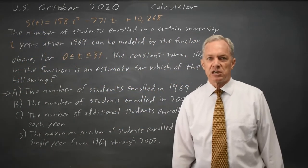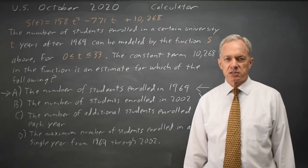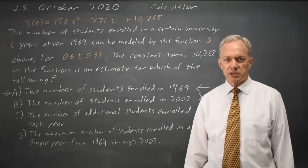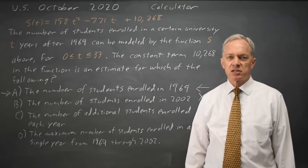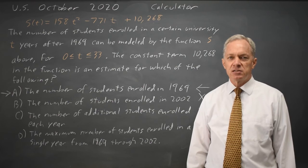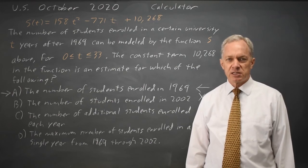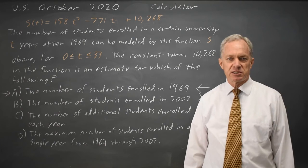College Board often asks you to interpret the slope or intercept of a linear equation or the constant term of a quadratic. And the constant term in a quadratic is the y value when x equals zero. Or in this case, the s value when t equals zero.